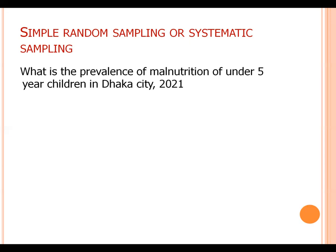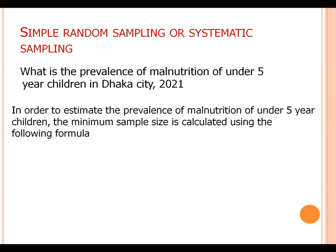Therefore, we will use sample size formula based on prevalence. In order to calculate the prevalence of malnutrition of under five year children, the minimum sample size is calculated using the following formula.